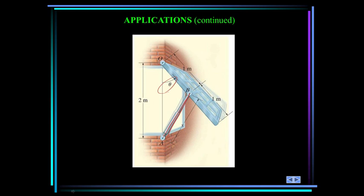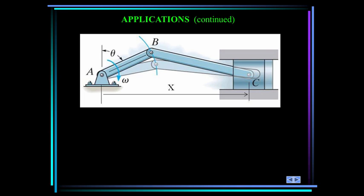Here's a piston and crank. The position of the piston x can be defined as a function of the angular position of the crank theta. By differentiating x with respect to time, the velocity of the piston can be related to the angular velocity omega of the crank. This is necessary when designing an engine.